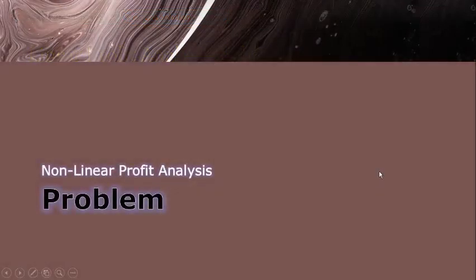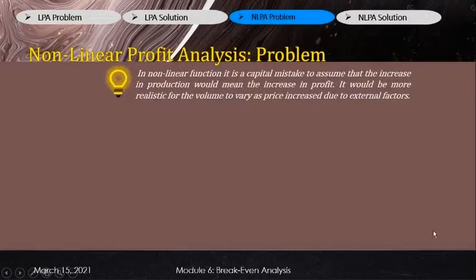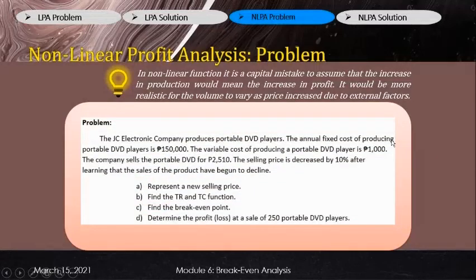Good day everyone. Let's proceed to non-linear profit analysis. In a non-linear function, it is a capital mistake to assume that an increase in production means an increase in profit. It would be more realistic for volume to vary as price increases due to external factors. The problem: the JC Electronic Company produces portable DVD players. The annual fixed cost is 150,000 pesos, variable cost is 1,000 pesos, and the company's selling price is 2,510 pesos, which is decreased by 10 pesos per unit.